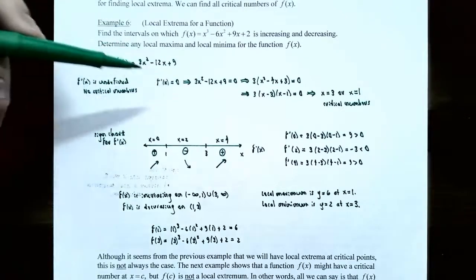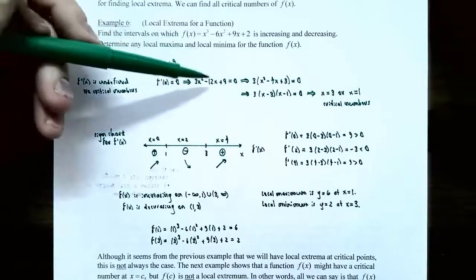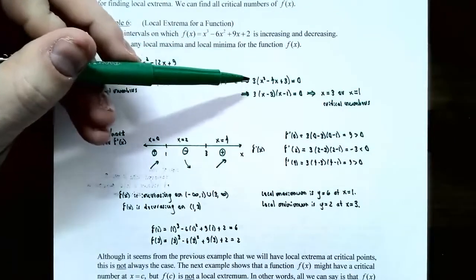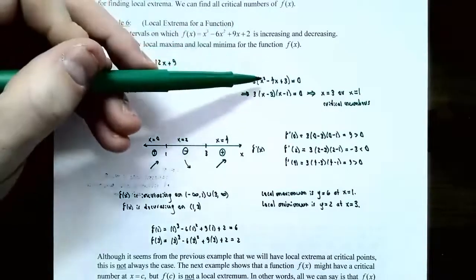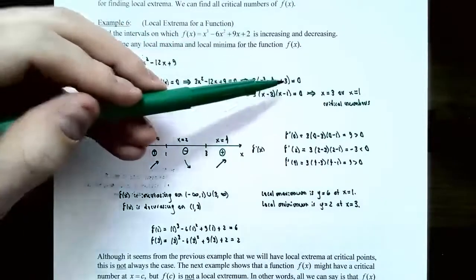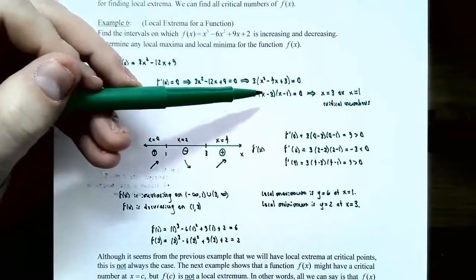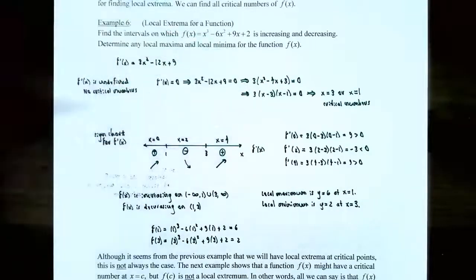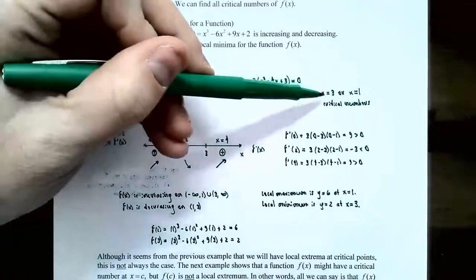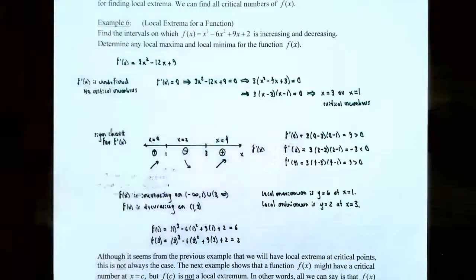Critical numbers may also occur when the derivative is zero. Setting f'(x) = 0: 3x² − 12x + 9 = 0. Factor out 3 as the GCF: 3(x² − 4x + 3) = 0. Two numbers that multiply to positive 3 and add to negative 4 are −3 and −1, so this factors as 3(x − 3)(x − 1) = 0. Since the product equals zero, one factor must be zero: x − 3 = 0 gives x = 3, and x − 1 = 0 gives x = 1. So you have two critical numbers: x = 1 and x = 3.